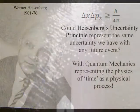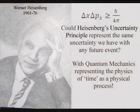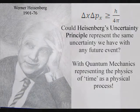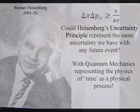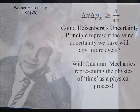The second postulate is that, at the smallest scale of this process, Heisenberg's uncertainty principle, that is formed by the wave function, is the same uncertainty we have with any future event.